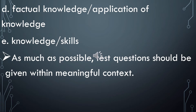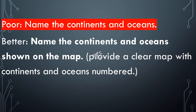Meaning to say, the test should be useful when you give it to your students. For example, if your test is simply to name the continents and oceans, that is considered a poor test. It is better to have students name the continents and oceans shown on a map, by providing a clear map with continents and oceans numbered. That way, students will enjoy and appreciate your test.